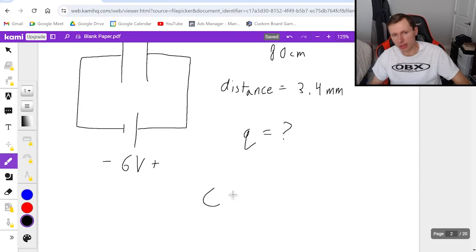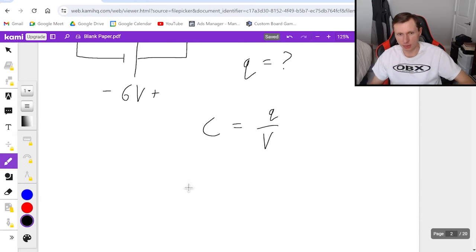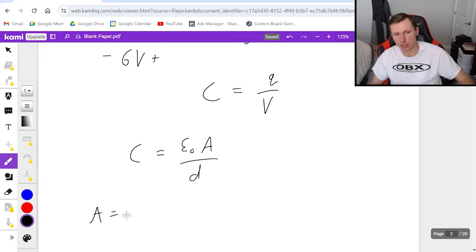So if you choose to start with C equals Q over V, we have the voltage, it's 6, but we don't have the capacitance. And of course, we're going to find that capacitance using the other equation, C equals epsilon naught A over D. Before I plug in numbers for this equation, I have to know that the area of a circle is pi radius squared.